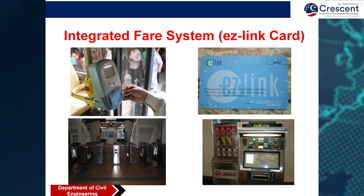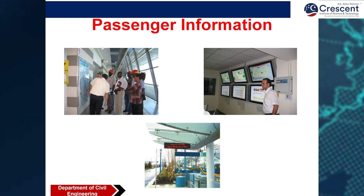In an automated vehicle, when you get in you can put this e-link card and get out. When you enter a station, you can also book the card at the kiosk in the station itself. This is an integrated fare system called the e-link card, also known as the EZ-link card.